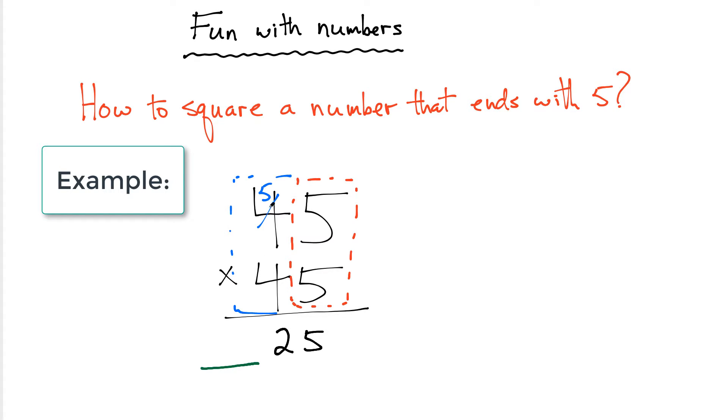So you'd simply multiply 4 times 5. You would get 20, 25 would be your answer.